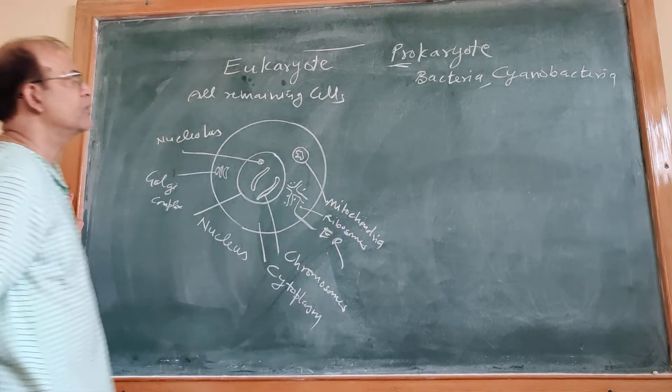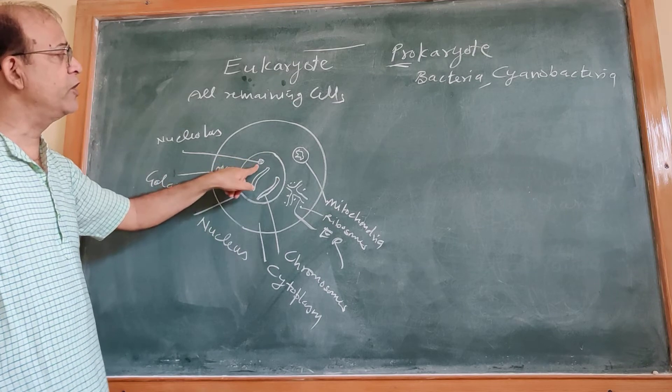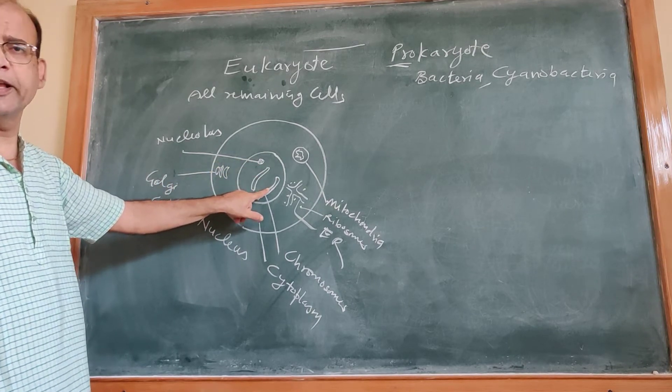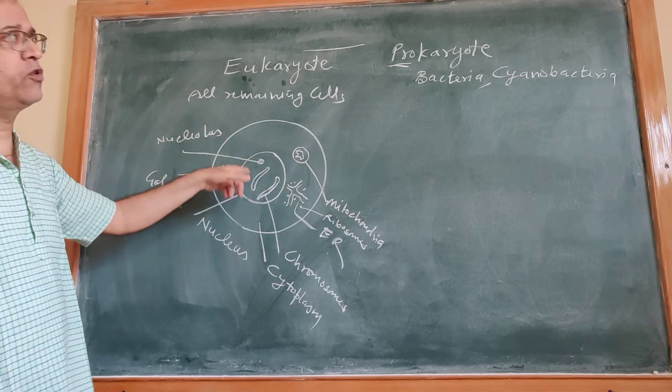Ribosomes. So, eukaryote itself has well-organized nucleus, having nucleolus, chromosomes containing genetic material, and well-organized organelles are present. Eukaryote.